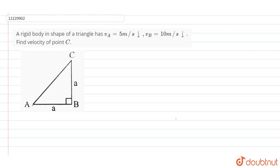This is a rigid body. It is a triangle shape. The velocity at point A is 5 meter per second downwards. The velocity at point B is 10 meter per second downwards. So you can see that this rigid body is rotating.